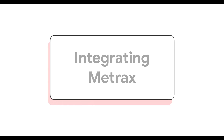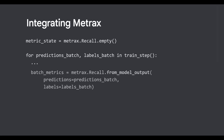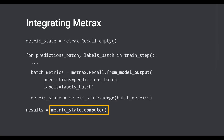On a practical level, Metrax is designed for easy integration into your existing JAX workflows and provides a consistent functional API. This API typically involves three main method calls: from_model_output, used to create the metric class from the inputs; merge, to update results each time there are more model outputs; and compute, to get the final result. This makes it straightforward to incorporate Metrax metrics directly into your training or evaluation loops, especially for JIT-able metrics.